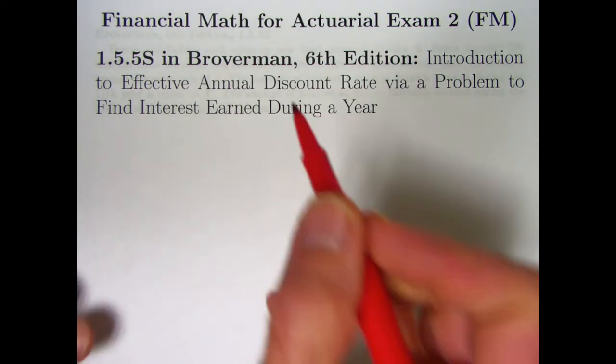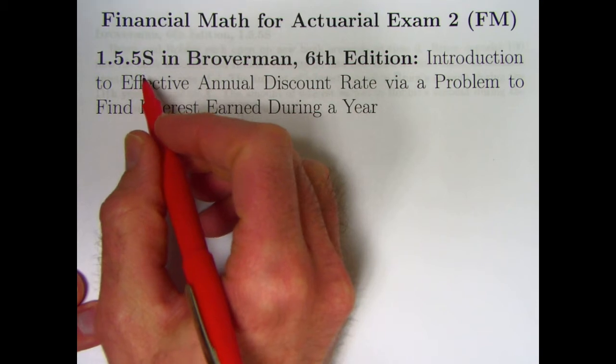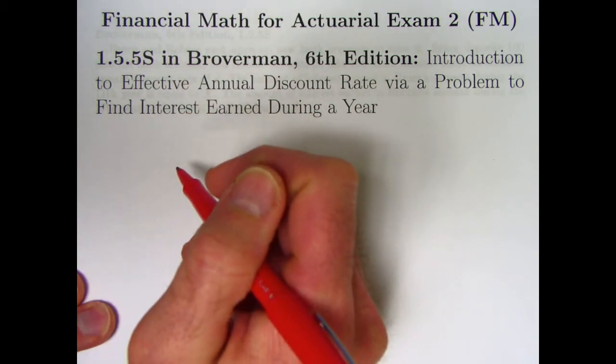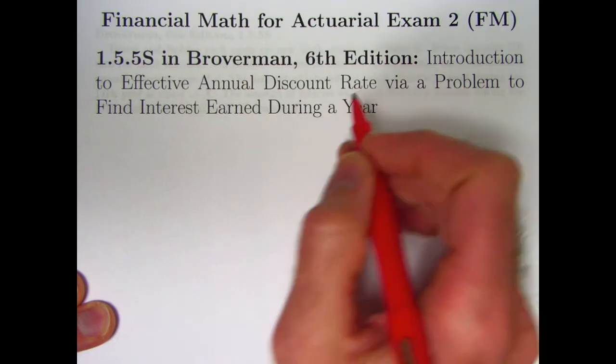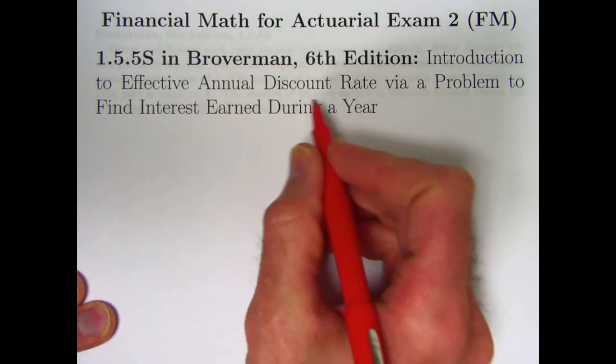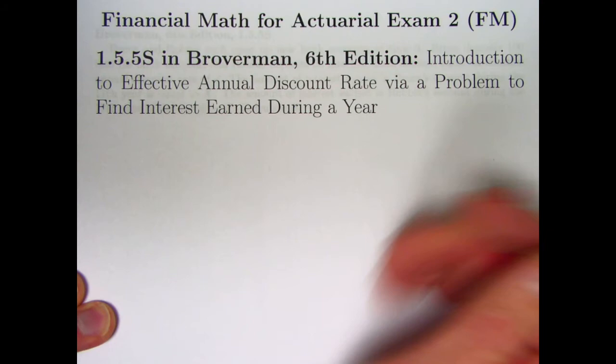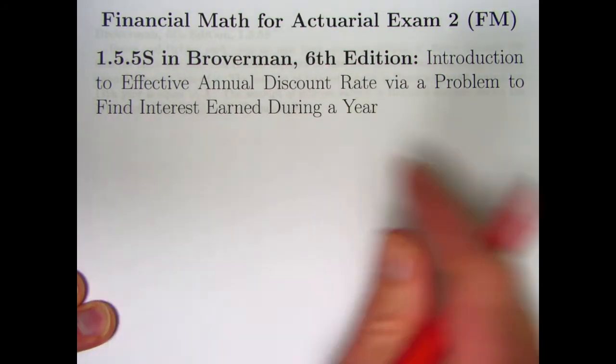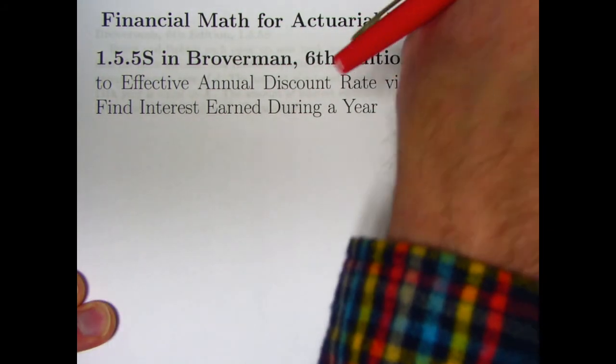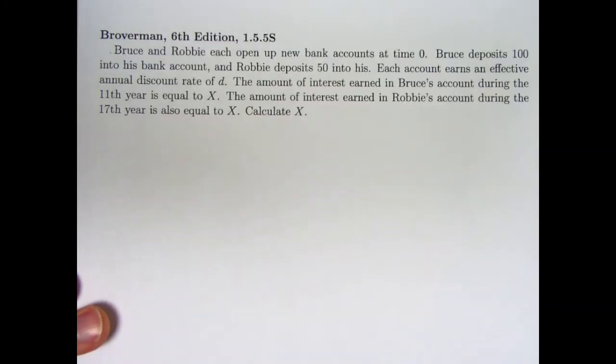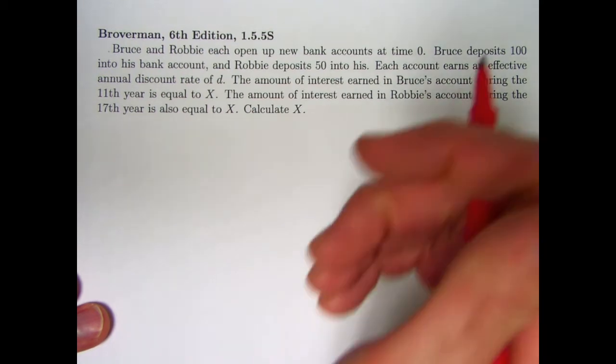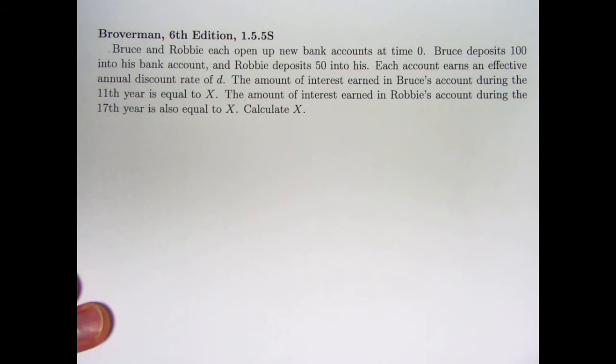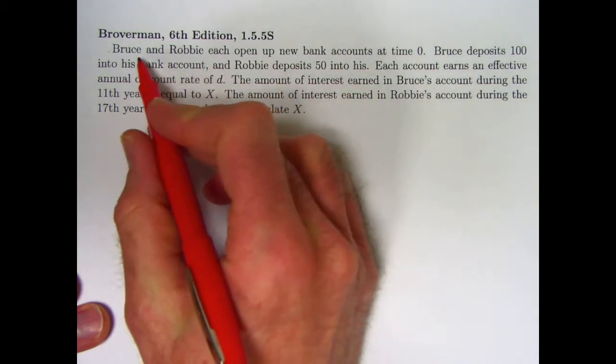Hi, this video is going to take a look at problem 1.5.5S in Broverman. It is an old exam question. I'm going to use it as a way of introducing the idea of an effective annual discount rate, which is just another way to measure interest via a problem to find the interest earned during a year. It's kind of an odd problem, actually. It's in section 1.5 of Broverman, which is about effective annual rates of discount, but you really don't need that idea to be able to solve the problem. Let's take a look at the problem.